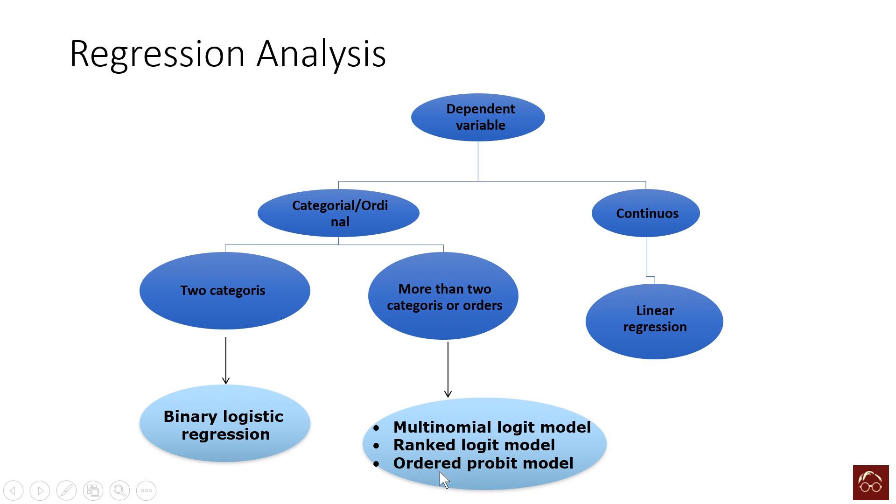I would consider values from 1 to 4 where you have a rank order, like 4 is better than 3 and 3 is better than 2 and 2 is better than 1. When you have an order like that, then I will consider it as an ordered variable. And if your dependent variable is like that, I will go for ordered probit or ordered logit.